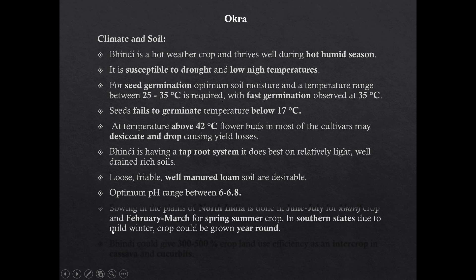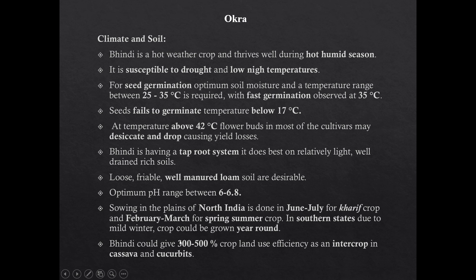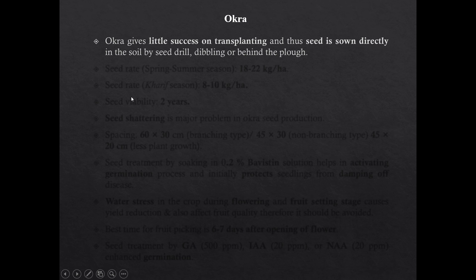Sowing in plains of North India is done in June-July for kharif crop and February-March for spring-summer crop. In southern states, due to mild winter, the crop can be grown throughout the year. Okra can give 300 to 500% crop land use efficiency as an intercrop in cassava and cucurbits. Okra gives little success on transplanting; thus, seed is directly sown in soil by seed drill, dribbling, or behind the plough.